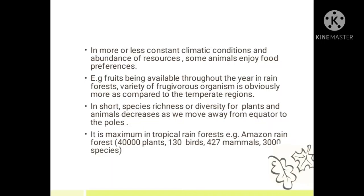In short, species richness or diversity for plants and animals decreases as we move away from the equator to the poles. It is maximum in tropical rainforests — for example, the Amazon rainforest, which has 40,000 plant species, 130 bird species, 427 mammalian species, and 3,000 other species. That is the latitudinal gradient.